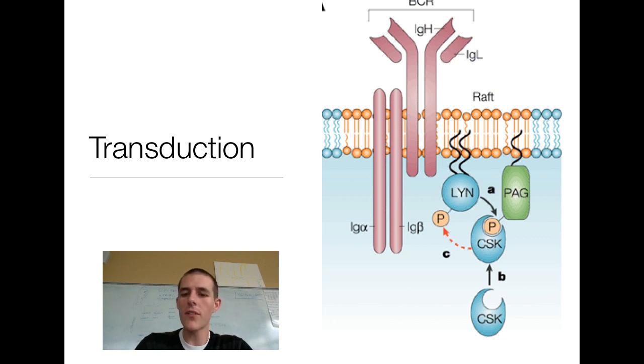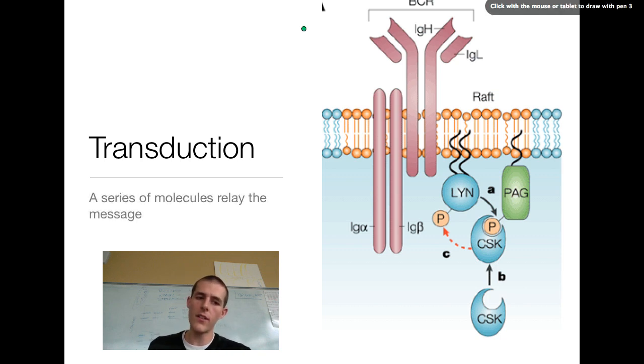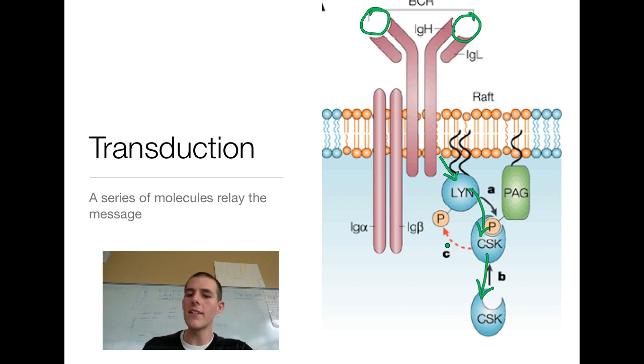And the receptor starts a transduction pathway. And what that is, is a series of molecules that relay the message. So this guy would be activated by your signal molecule. It would cause a change in this molecule, which would cause a change in this molecule, and a change in that molecule. So this series of molecules is a signal transduction pathway. These guys are known as second messengers because they are the second part of the message, I guess. And they act on each other in a transduction pathway.